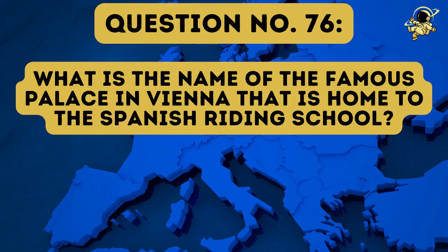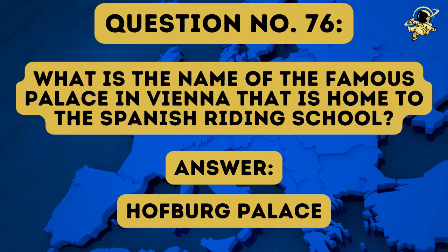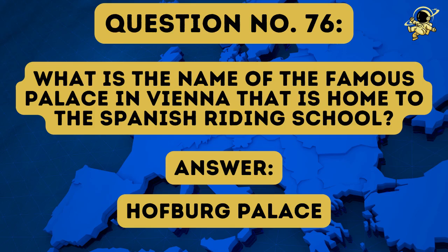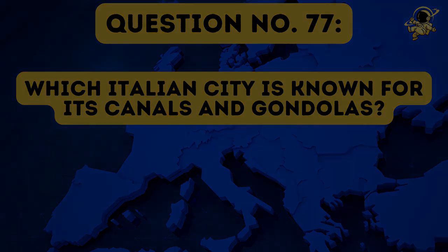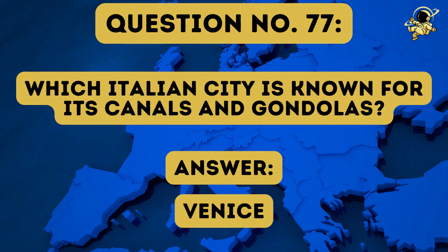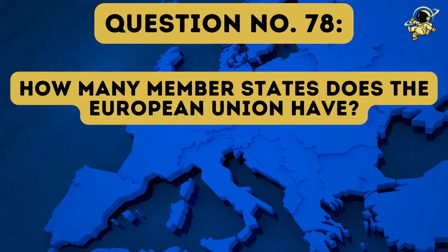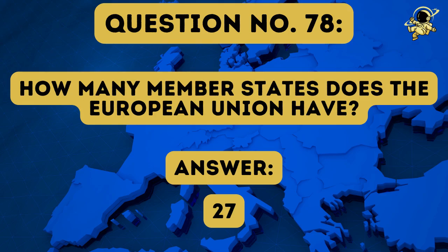Question number seventy-six: What is the name of the famous palace in Vienna that is home to the Spanish riding school? The answer to question number seventy-six is the Hofburg Palace. Question number seventy-seven: Which Italian city is known for its canals and gondolas? The answer to question number seventy-seven is Venice. Question number seventy-eight: How many member states does the European Union have? And the answer to question number seventy-eight is twenty-seven.